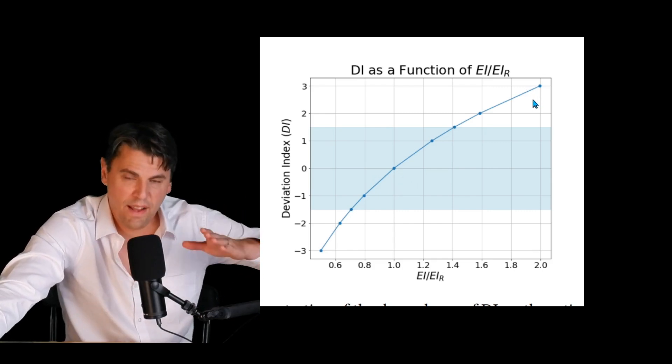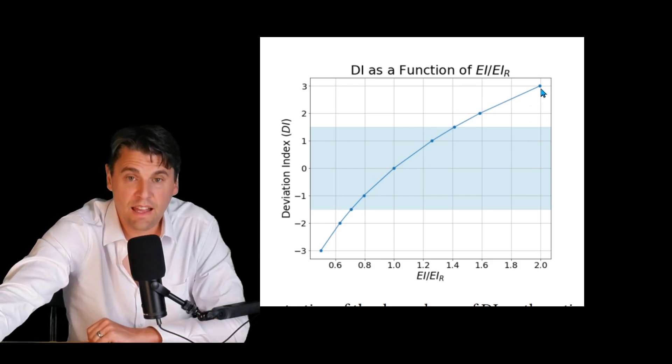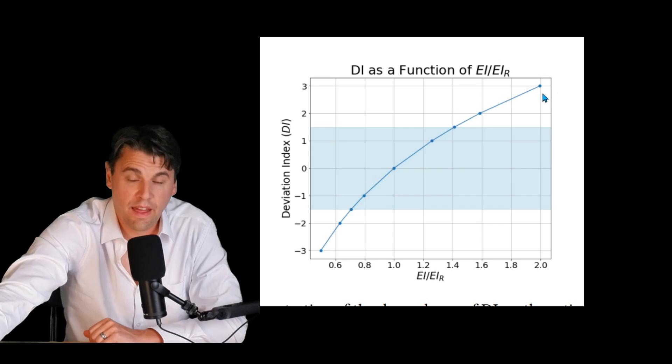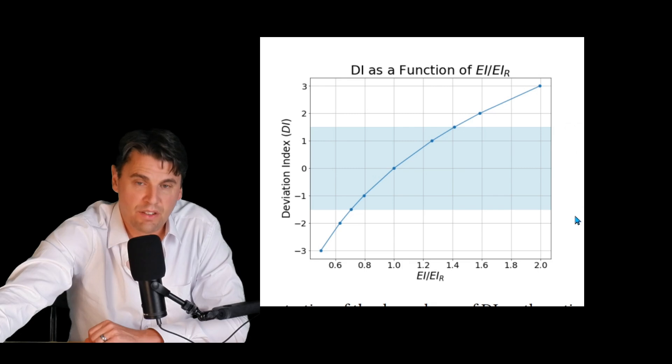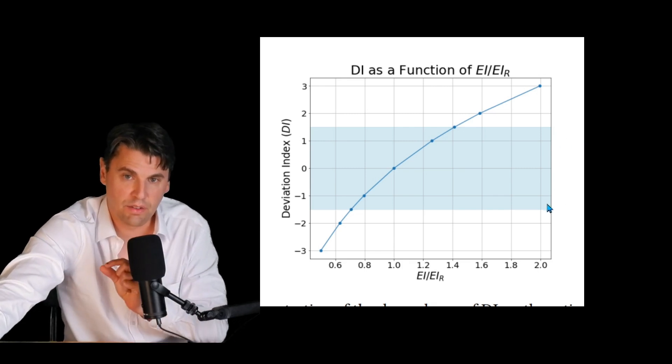Then for instance, if you had twice as much exposure on the image receptor as you were hoping or planning to do with that target or reference, then you actually would have a deviation index of three. Likewise, if you had half as much exposure as you were targeting, you would have a deviation index of minus three. The idea is with the deviation index, you'd like to stay as close as possible to the planning and get the deviation index smaller.